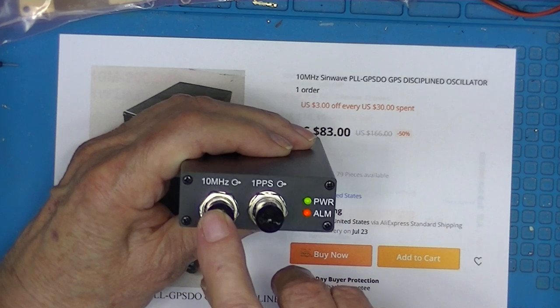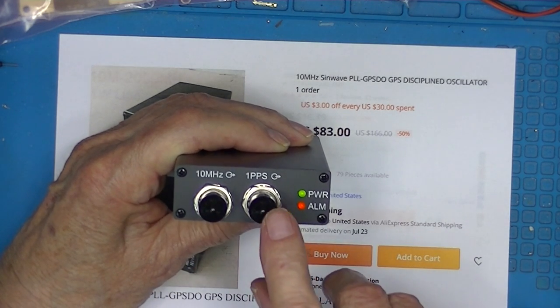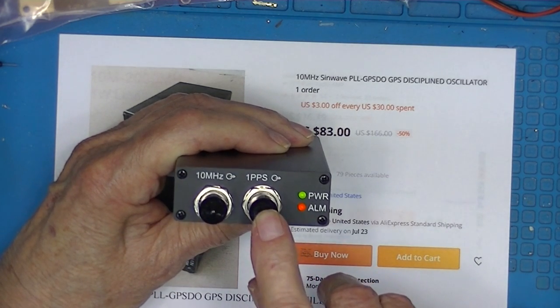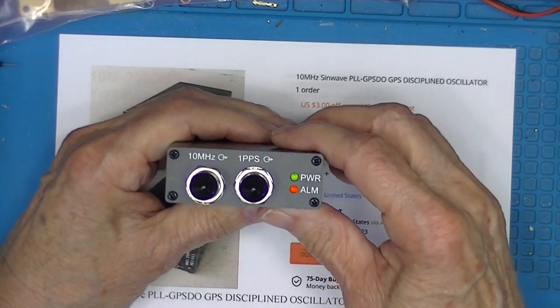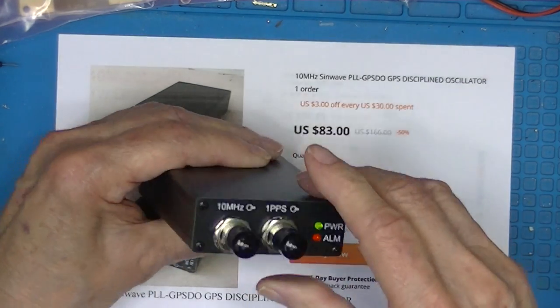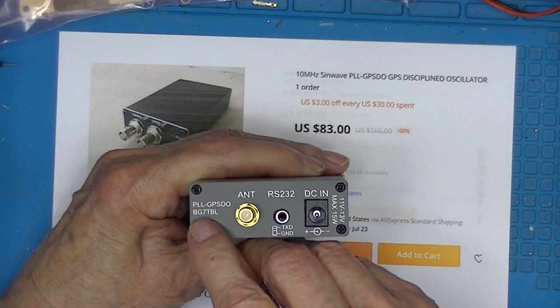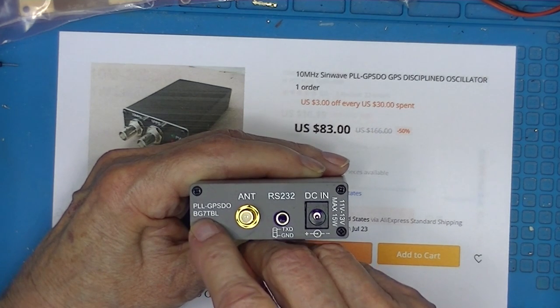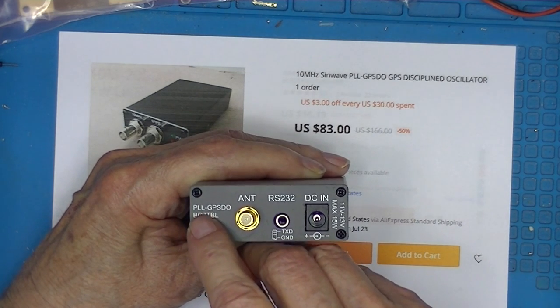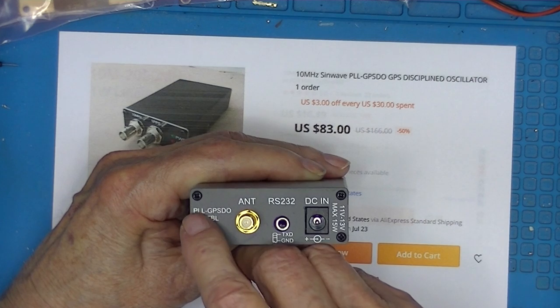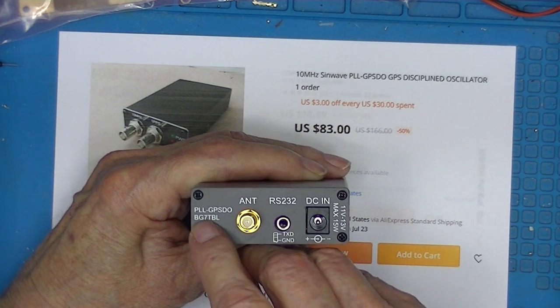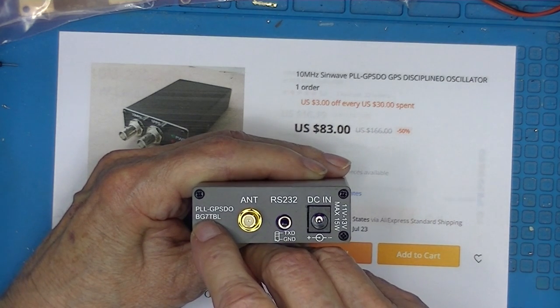It's got a 10 megahertz sine wave output and a one pulse per second square wave output, at least according to the documentation. This BG7TBL seems to be recognized to be a higher quality than a lot of the Chinese stuff.